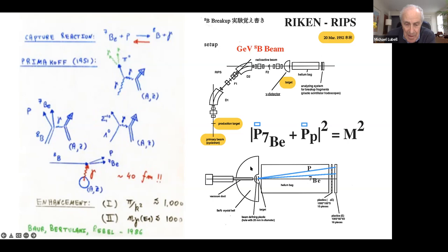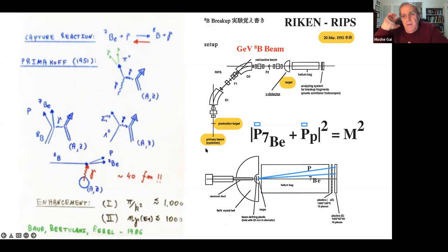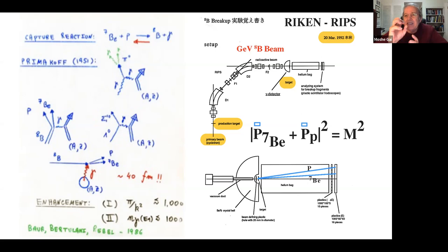The primary beam is a normal cyclotron beam; the target is a normal nuclear physics target. From this reaction we choose the boron-8 beam of interest and throw it on a lead (high-Z) target. The boron-8 interacts with the virtual photon cloud surrounding the lead target, and we measure the beryllium-7 and the proton at forward angles.